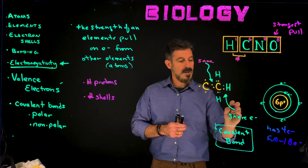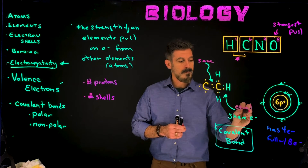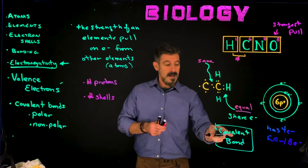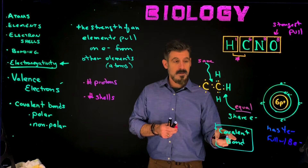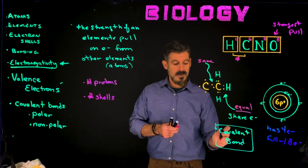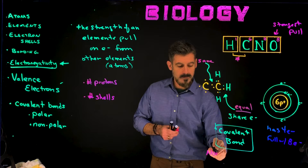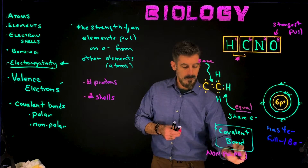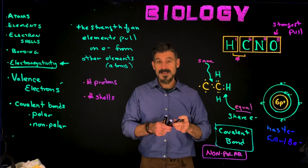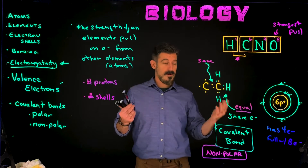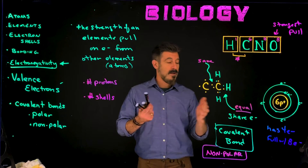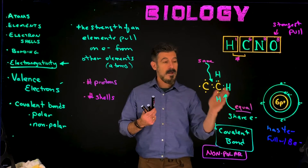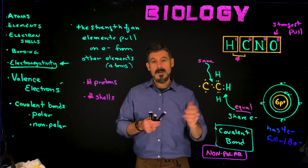Hydrogen and carbon are going to share electrons equally. This type of covalent bond — equal sharing — is what we call a nonpolar covalent bond. It's nonpolar because it does not create any type of charge. The electrons are shared equally, equally positive and equally negative, spending a fairly equal amount of time with each element.